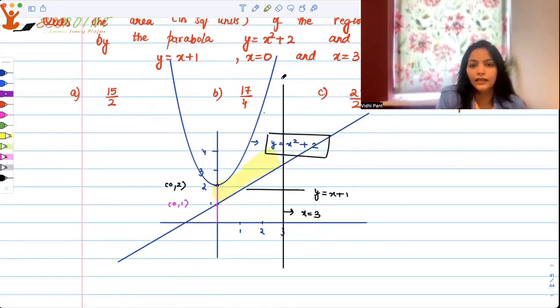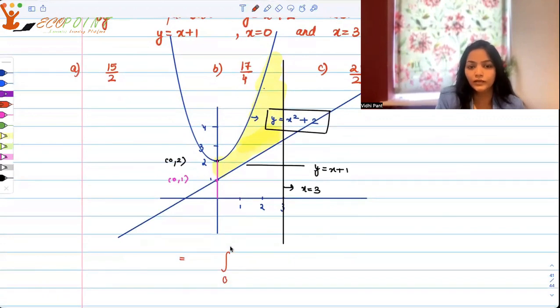And the area in between this parabola, the line x plus 1, and the line x equal to 3 will basically be equal to the area under the curve, this parabola from 0 to 3. x is between 0 to 3.